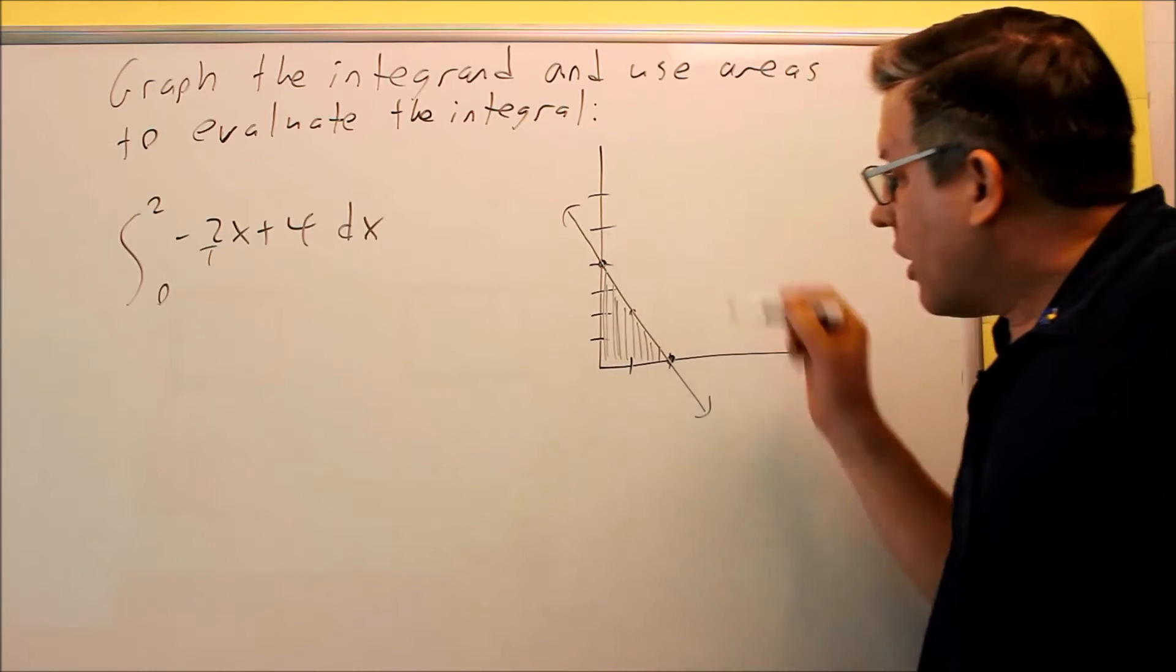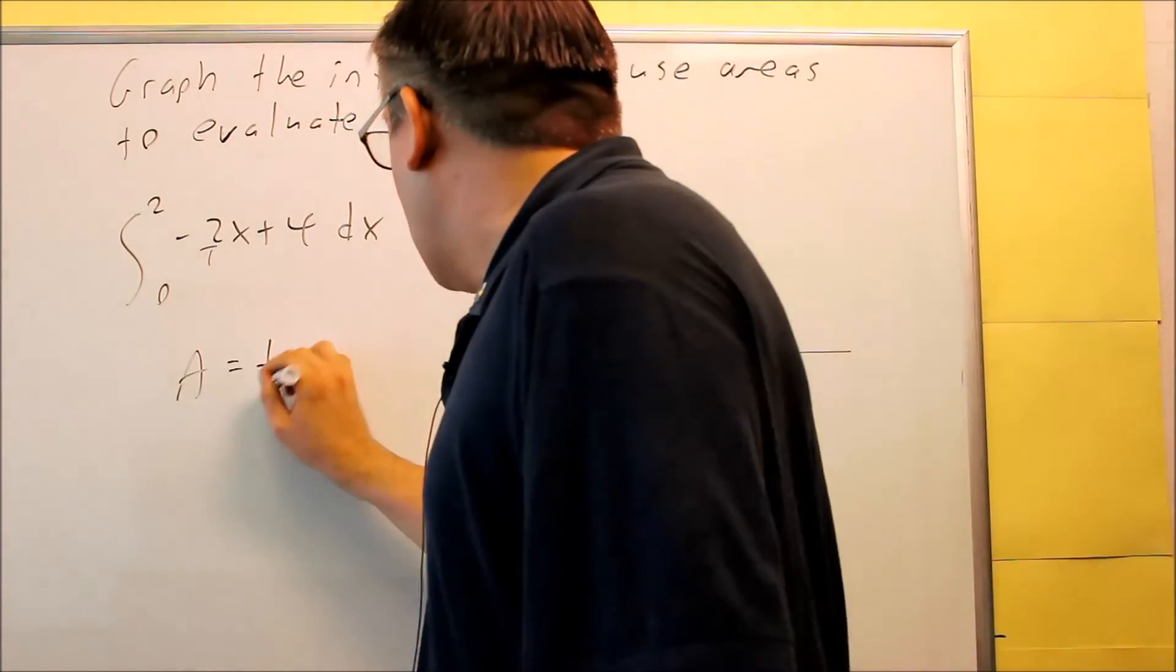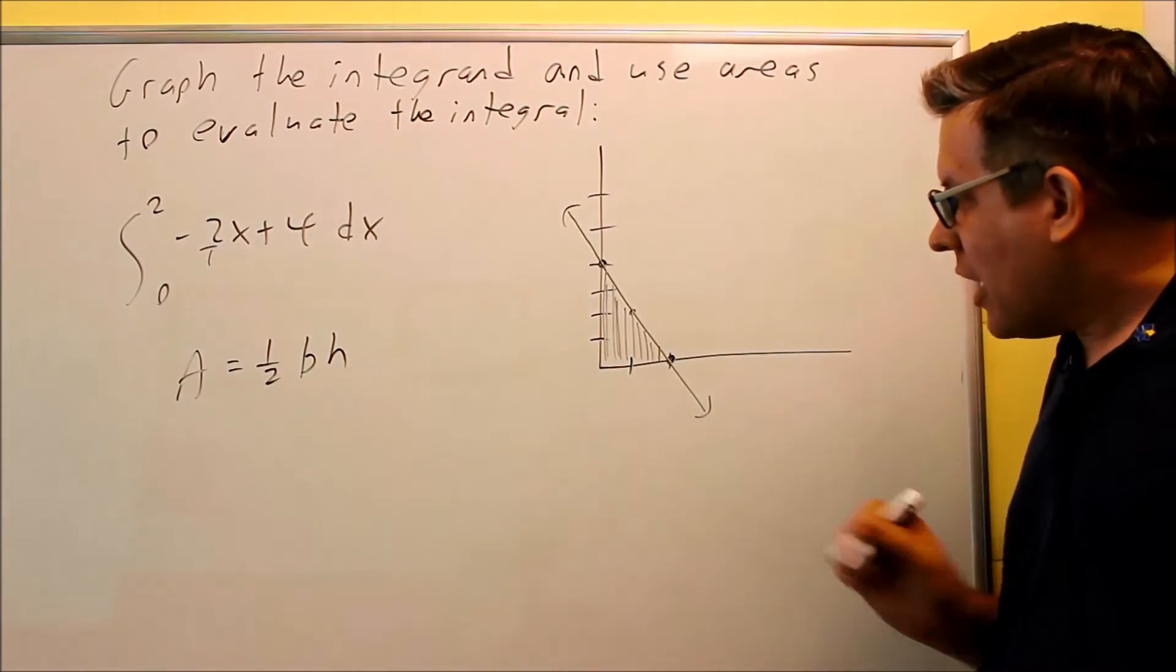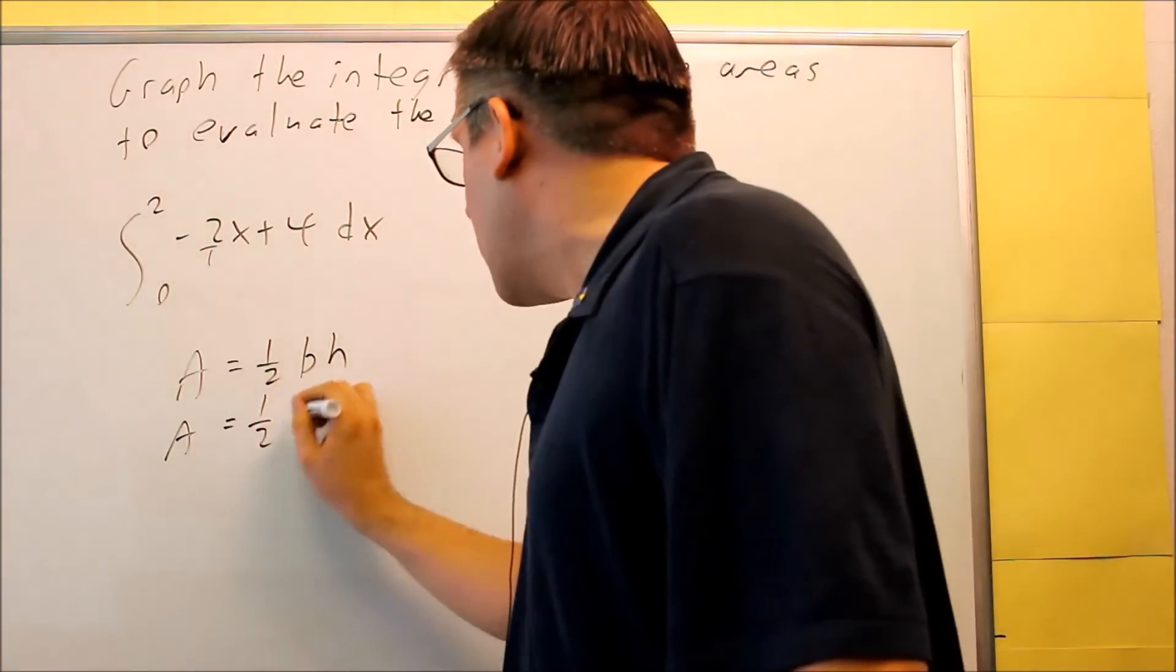Now how do we find that area? Well, we're going to apply a geometry formula. Remember from geometry that the area of a triangle, area equals 1 half base times the height. The base is going to be 2, and your height is going to be 4. We can just put that right in there. Base of 2 and a height of 4.